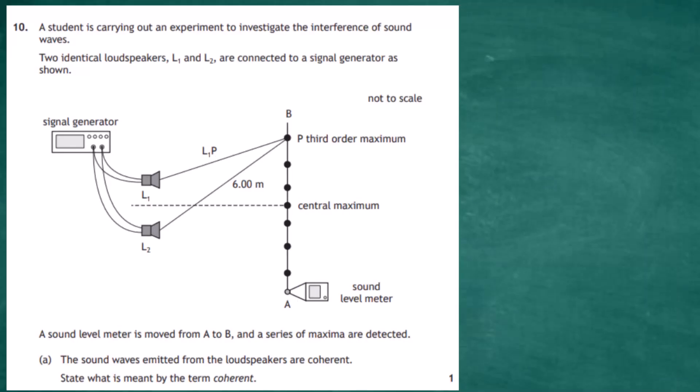Question 10 from Section 2 of the 2022 Higher Physics examination from the SQA. A student is carrying out an experiment to investigate the interference of sound waves. Two identical speakers L1 and L2 are connected to a signal generator, as shown in the diagram. The signal generator produces the electrical signal transmitted through the speakers, and a sound level meter is moved along line AB, picking up maximum and minimum sounds. The diagram is not drawn to scale.